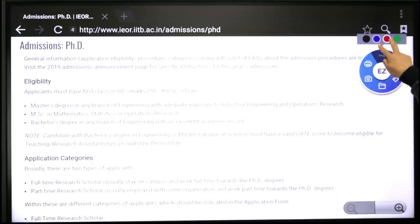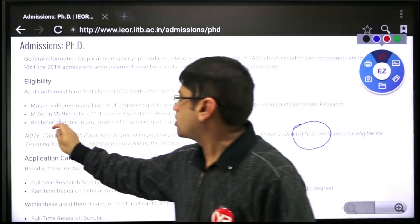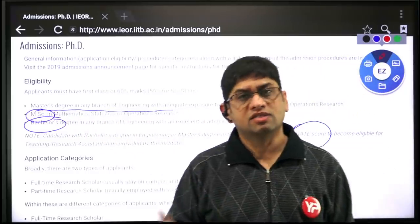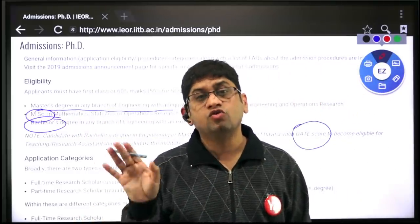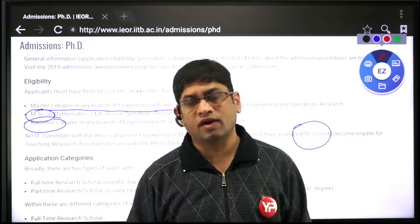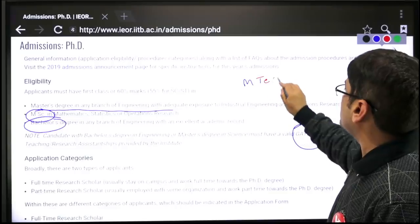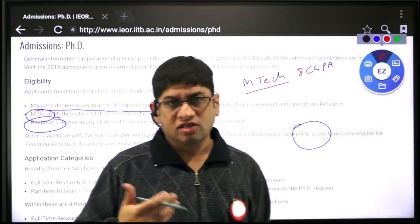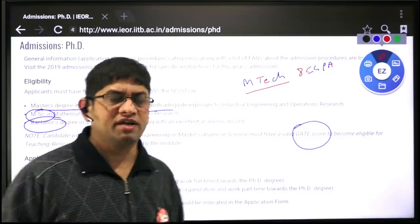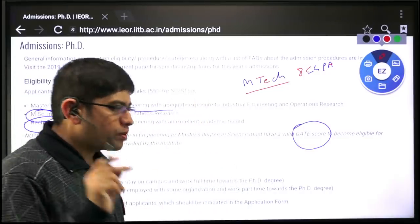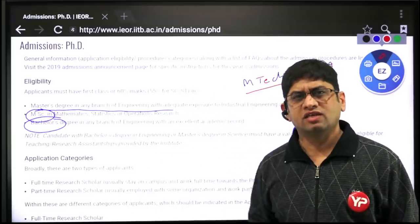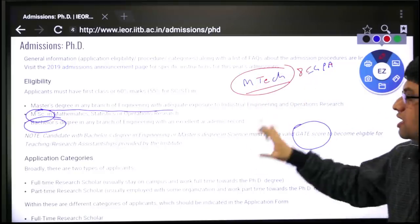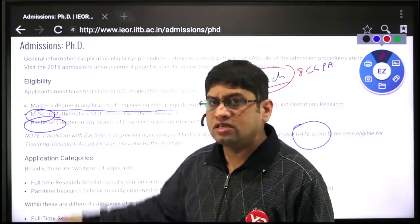A valid GATE score is required if you are only B.Tech or MSc. But if you have done M.Tech — a master's in engineering — and are applying for PhD, GATE score is not required. For M.Tech candidates, the key requirements are 8 CGPA (general category), thesis work, a good research proposal, and solid preparation for interview and written test. PDA Education guides you on how to prepare all of that.